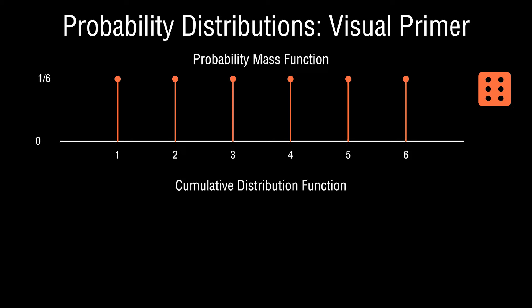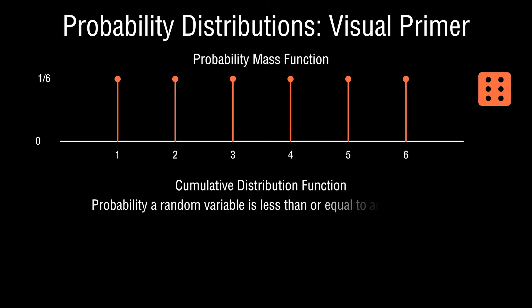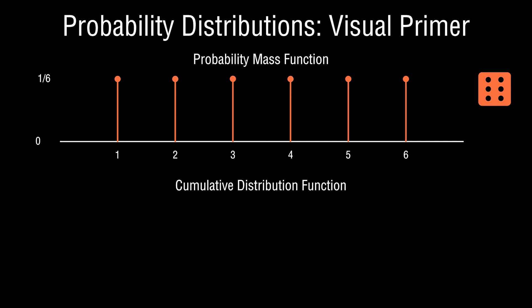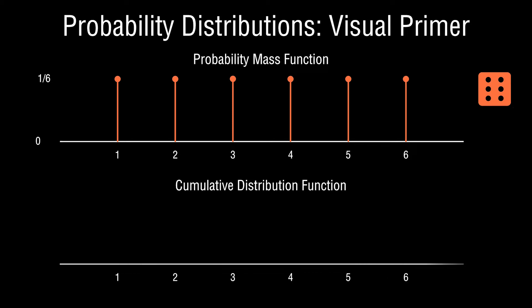Similar to a probability mass function, we have a plot with probabilities on the y-axis and outcomes on the x-axis. However, unlike a probability mass function where we plot the probability associated with each outcome, in a cumulative distribution function we plot the probability that the random variable will take on a value less than or equal to that outcome. One way to visualize this is to run a sliding window across the probability mass function.